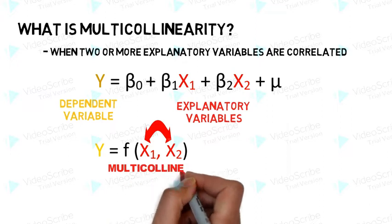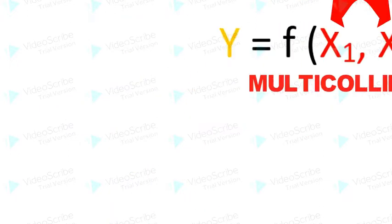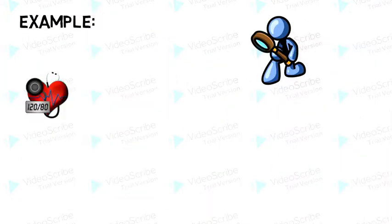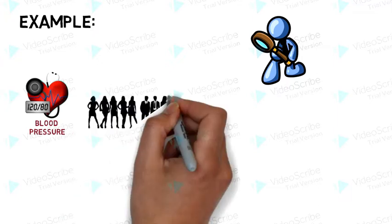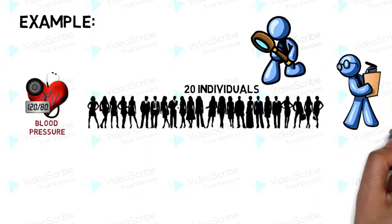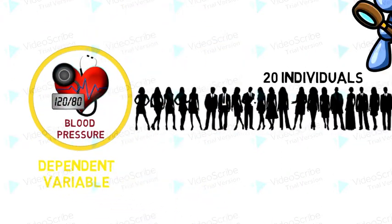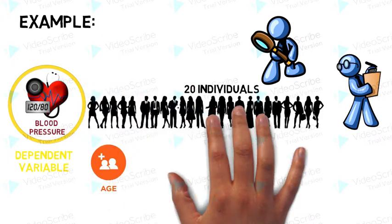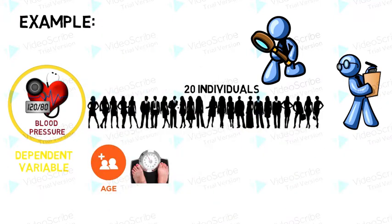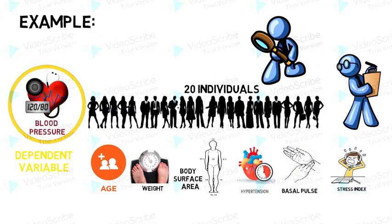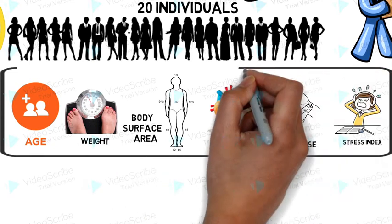Let me give you an example. Some researchers studied the factors that affect blood pressure and they observed 20 individuals. Here blood pressure is the dependent variable. The factors that affect blood pressure — such as age, weight of the individual, the individual's body surface area, the duration of hypertension, the basal pulse rate, and the level of stress experienced by the individuals — these were the independent variables.